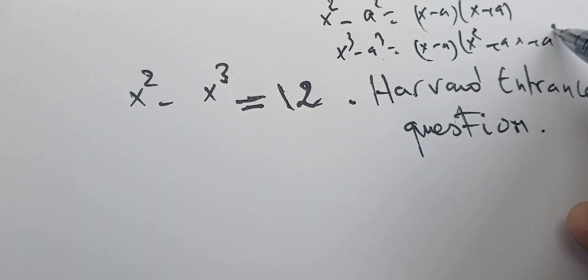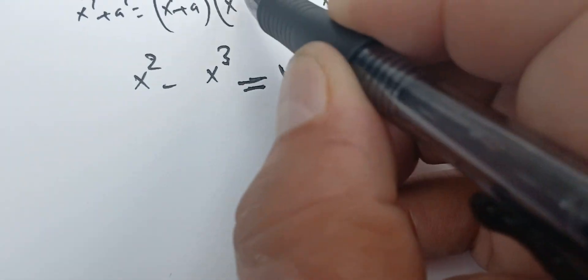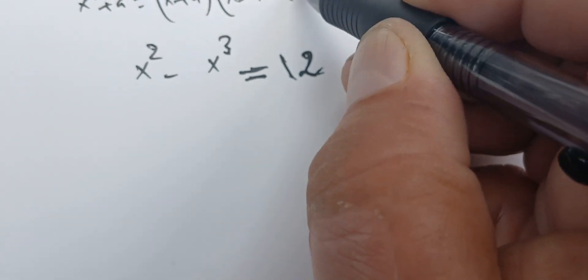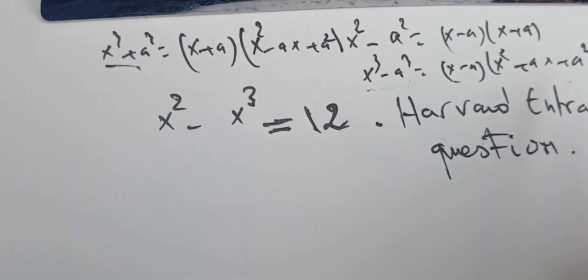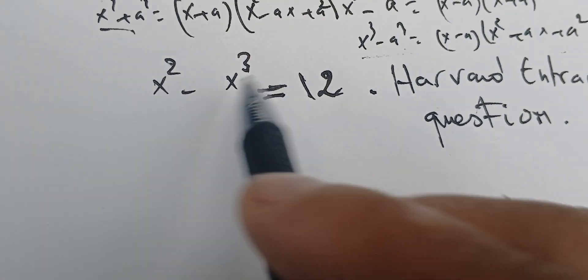And also x cubed plus a cubed is x plus a times x squared minus ax plus a squared. These formulas help a lot and we will see that they will help us in solving this question.